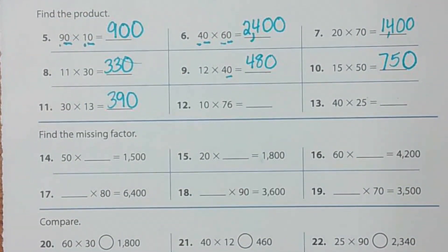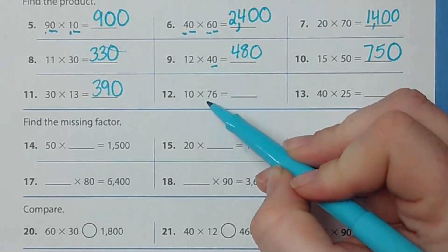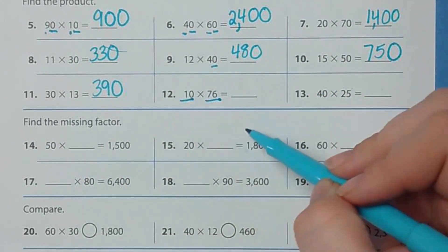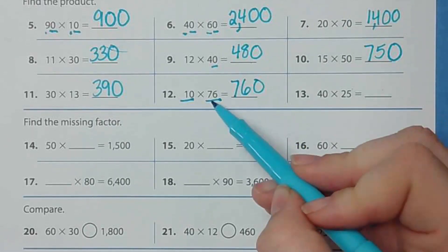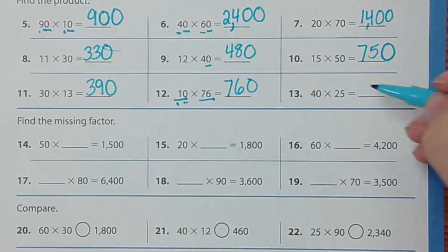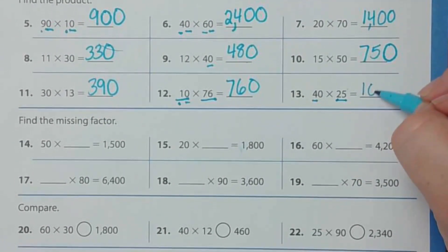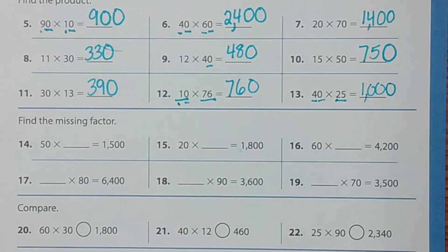After pausing and discussing, number 12: 76 times 10. When you're multiplying any number times 10, all you do is take that number and add a zero — because 76 times 1 is 76, then add a zero. Number 13: 40 times 25. Four times 25 is 100, then add one more zero — the answer is 1000.